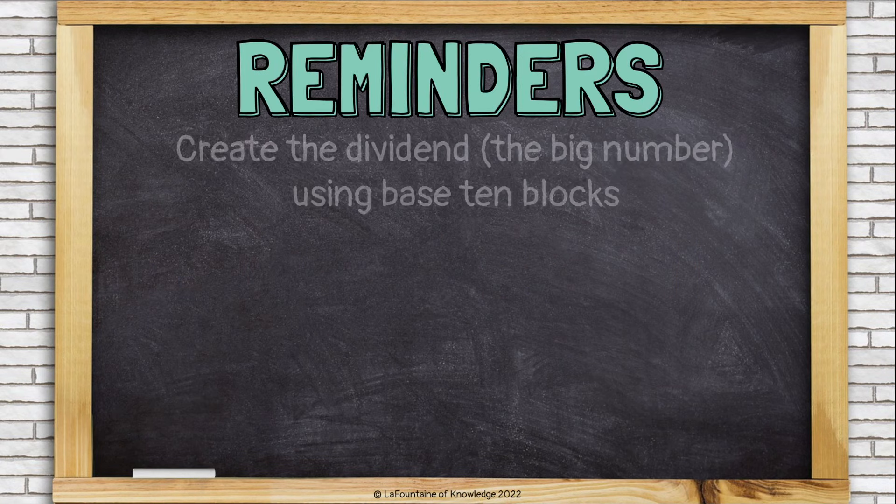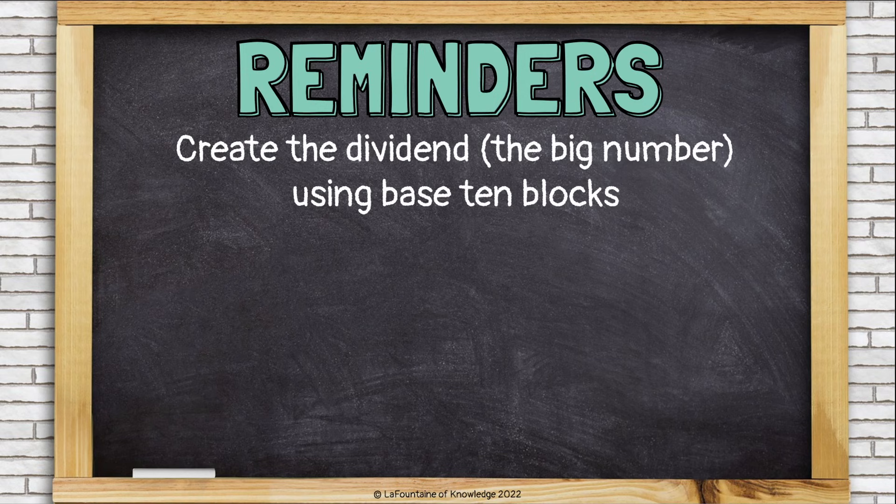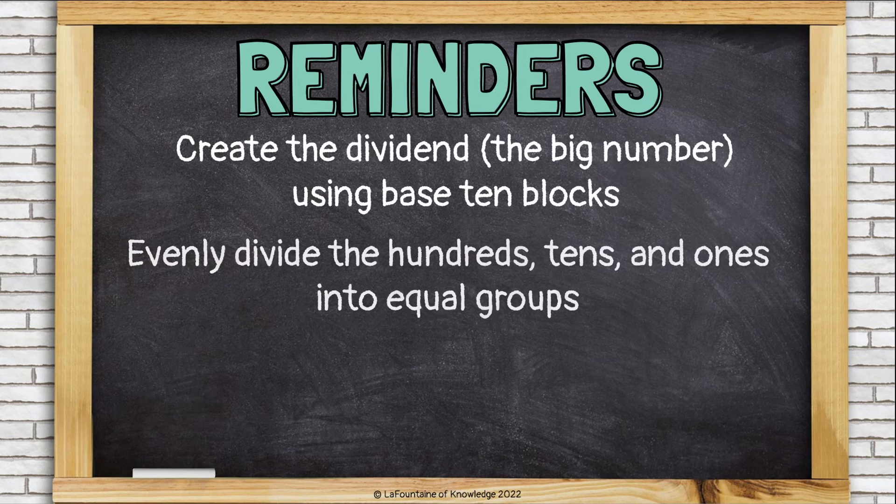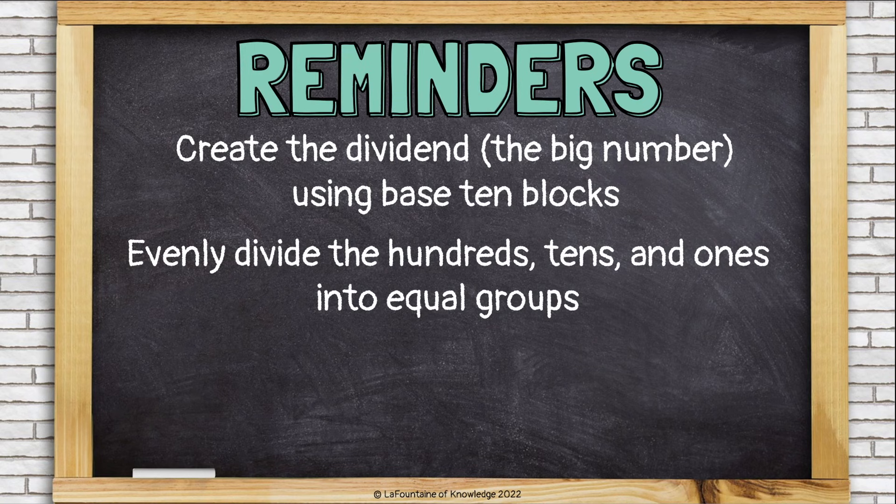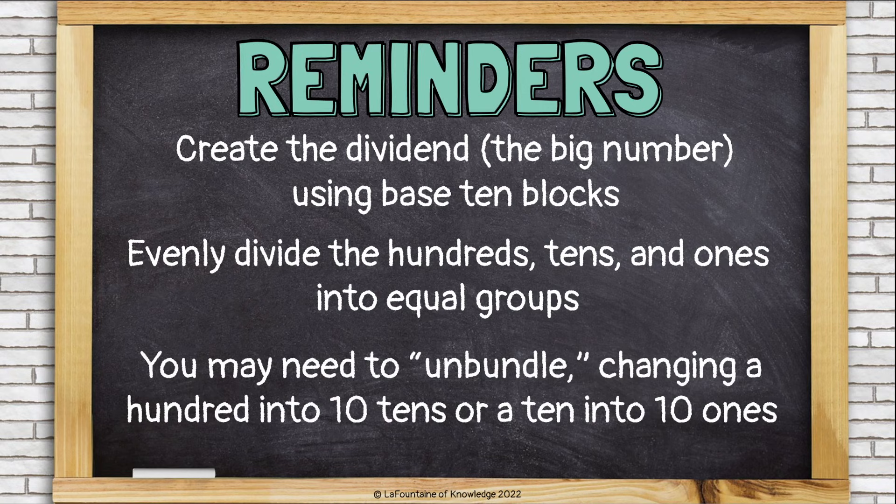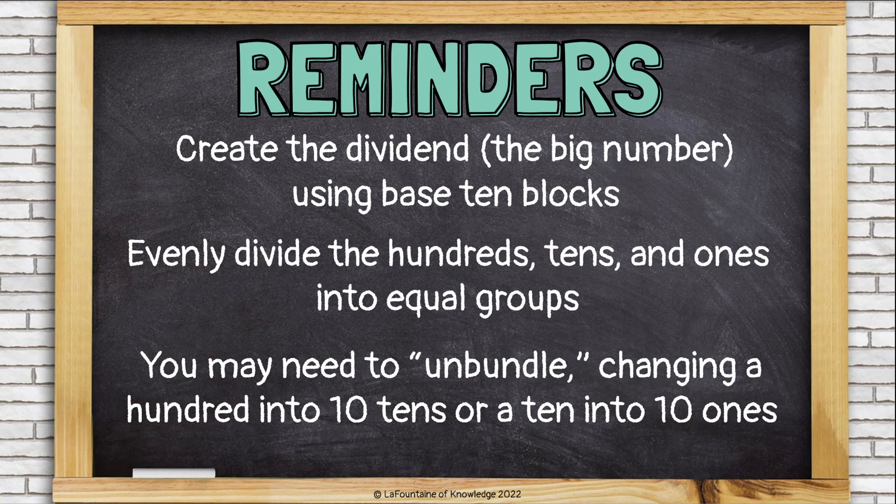Let's review. Create the dividend or the big number using the base ten blocks. Evenly divide the hundreds and then the tens and then the ones into equal groups. You may need to unbundle changing a hundred into ten tens or a ten into ten ones in order to divide evenly.